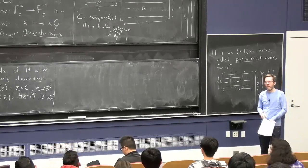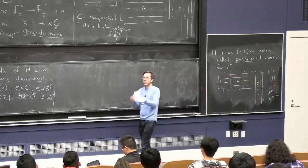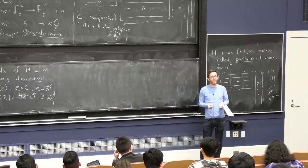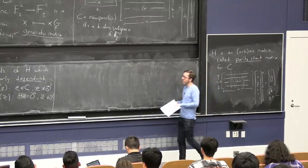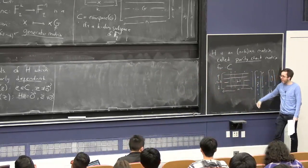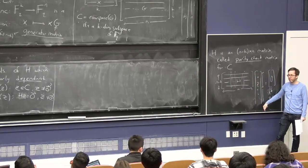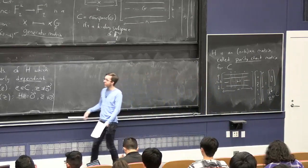Right, mod 2, or in the field of size 2, two vectors are linearly dependent if and only if they're the same vector. So as long as we take any matrix H that doesn't have the all 0's column and doesn't have two columns that are the same, then the smallest size of a linearly dependent set of columns is 3.